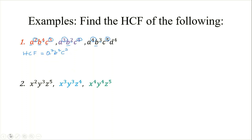Now let's look at example two. We are given x²y³z⁵, x³y³z³, and x⁴y⁴z⁵. To obtain the HCF, we pick out all the common terms. X is common to everything, so we look at the degrees: x is raised to the third, second, and fourth power respectively. The lowest power is x², so that is our first factor.